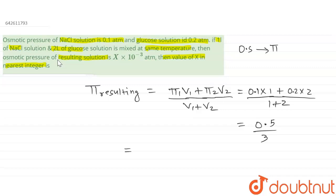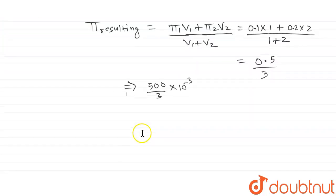I'm writing over here, so let's say this is 500 by 3 into 10 raised to power minus 3. Now in the further simplification what we are going to get over here is...